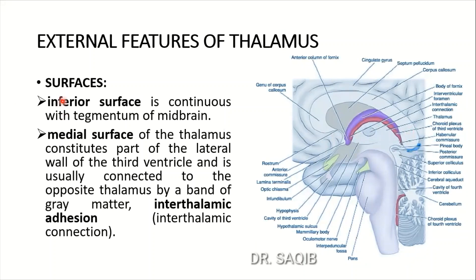Surfaces of the thalamus: the inferior surface is continuous with the tegmentum of the midbrain. The medial surface of the thalamus constitutes part of the lateral wall of the third ventricle and is usually connected to the opposite thalamus by a band of grey matter - the inter-thalamic adhesion or inter-thalamic connection. This thalamus on one side is connected to the other thalamus by this inter-thalamic connection.